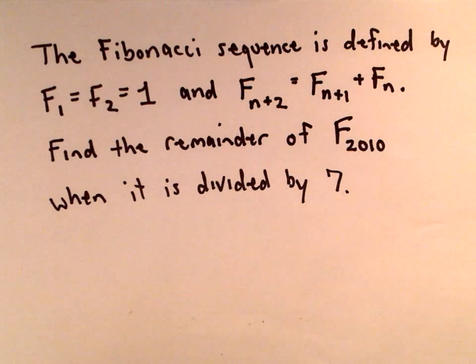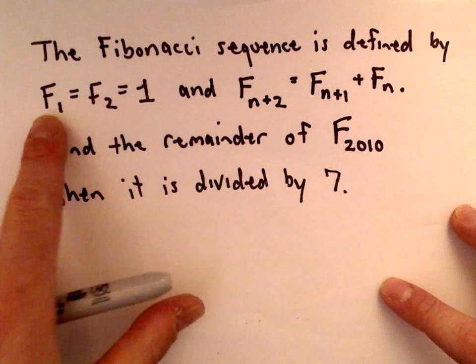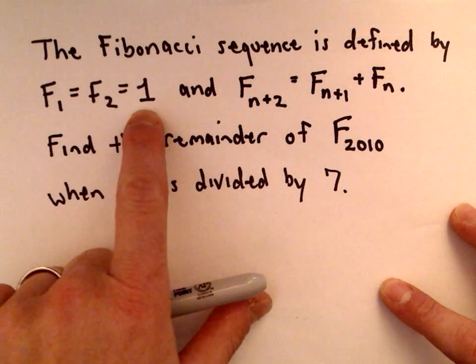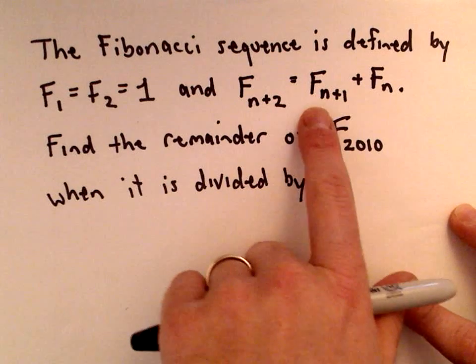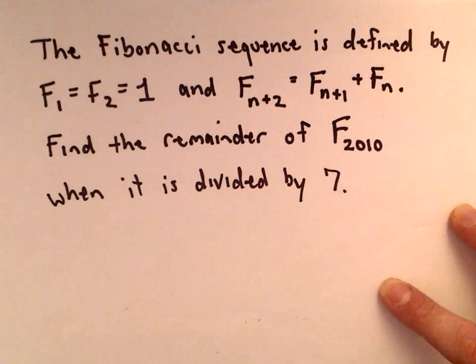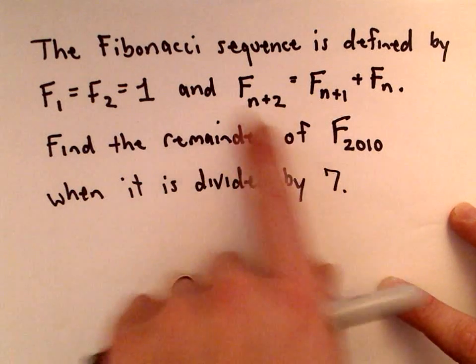So I'm sure you've seen the Fibonacci sequence. It's defined by F₁ and F₂ both equal 1, and F_{n+2} equals F_{n+1} plus F_n, which all it says is to get a new term, you just add the two prior terms.